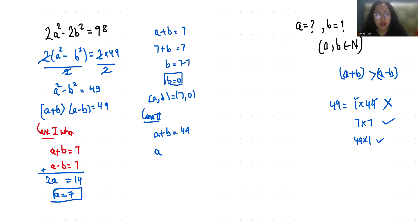So 2a equals 50, which gives us a equals 25.